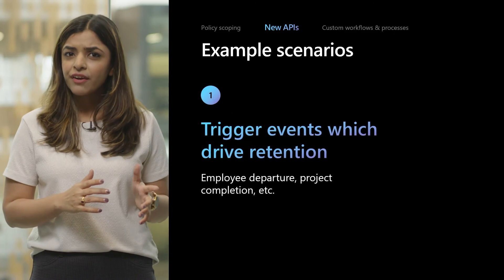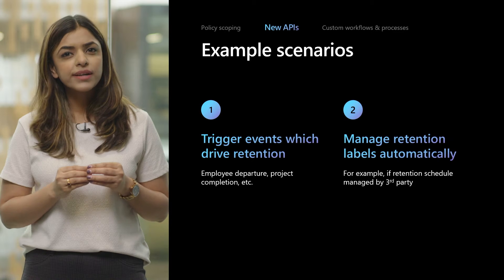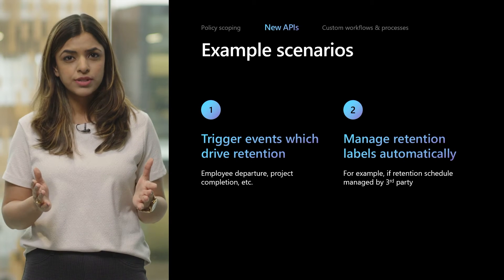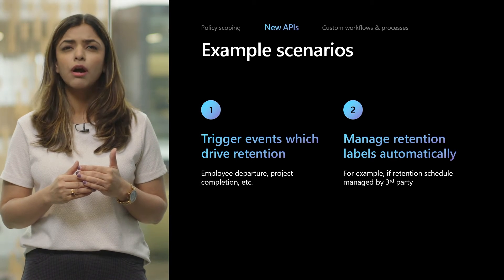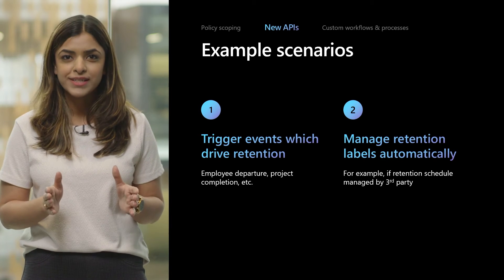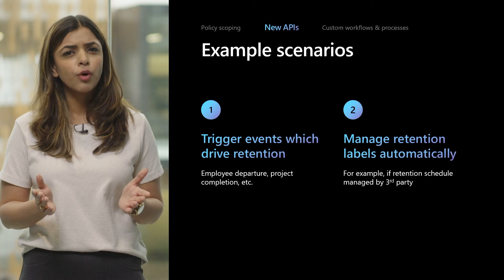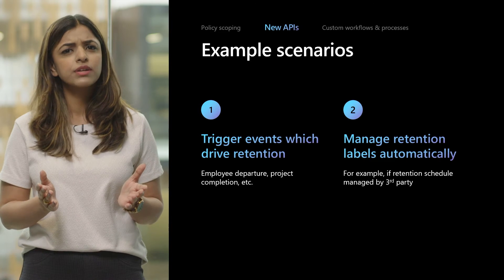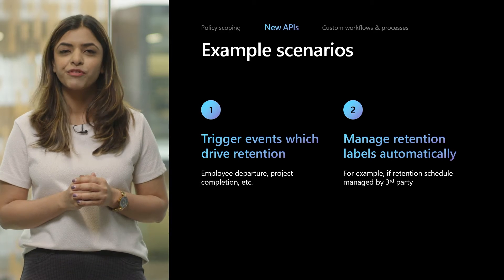Similar to the previous scenario, if your organization is using a third-party system to manage the retention schedule, or you need to automate the creation or update of new retention labels, you're able to do that through these new APIs. A simple scenario is where we have to modify the retention period of a particular type of content as per updated data privacy laws. This wraps up our overview of the new Graph APIs.